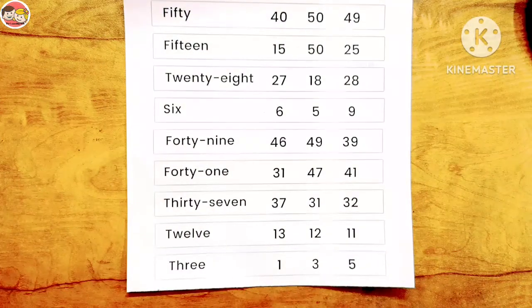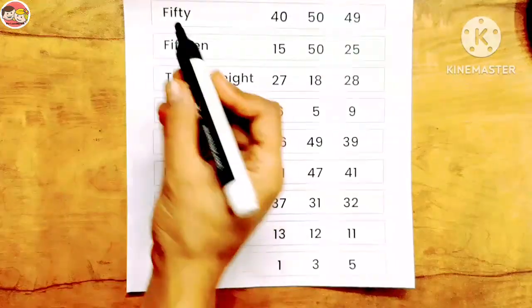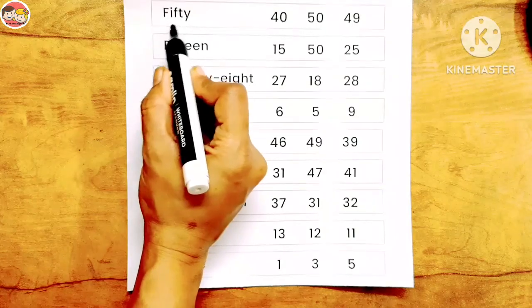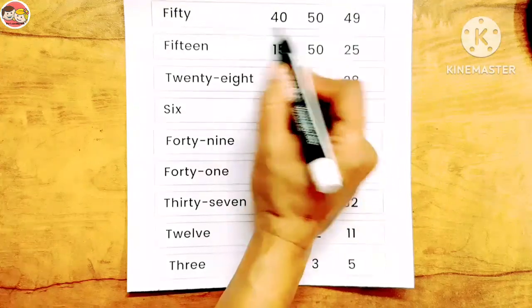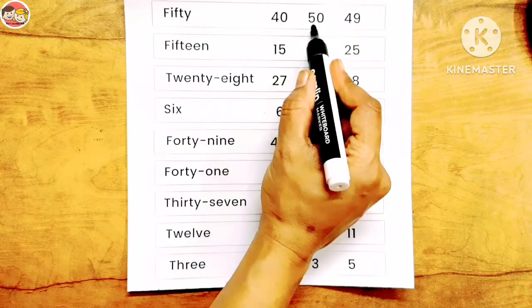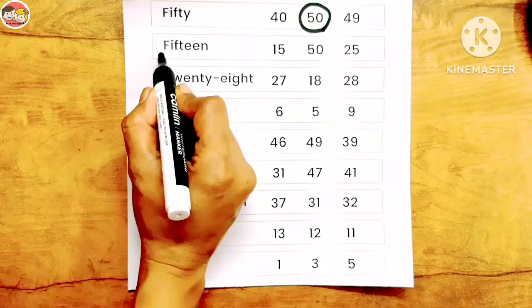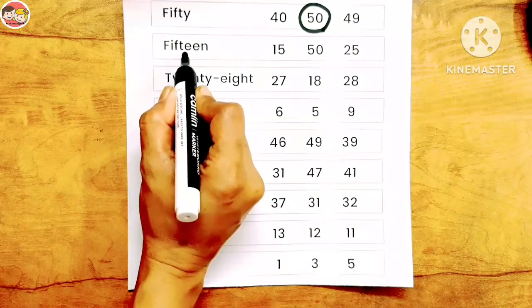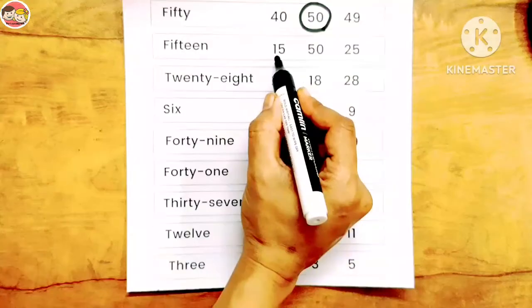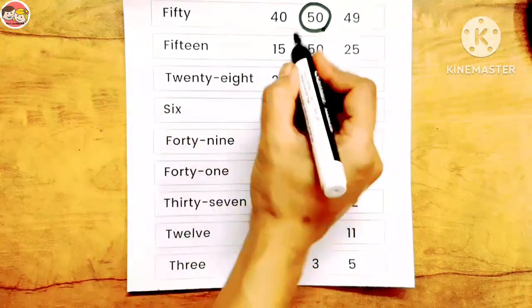Children, let's do a worksheet on number names. Circle the correct number for each word. Look at the first word: F-I-F-T-Y, 50. Find out the correct number for this word. Where is 50? Yes, this is 50 — 5-0. Let's circle it. Next: F-I-F-T-E-E-N, 15. Find out where 15 is. Yes, this is 15 — the correct number for this word. Let's circle it.